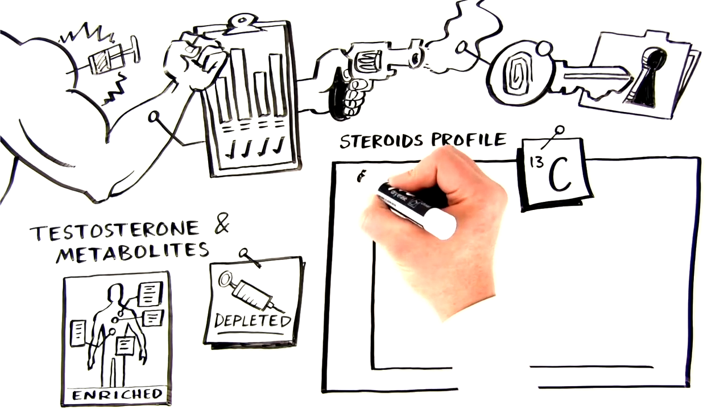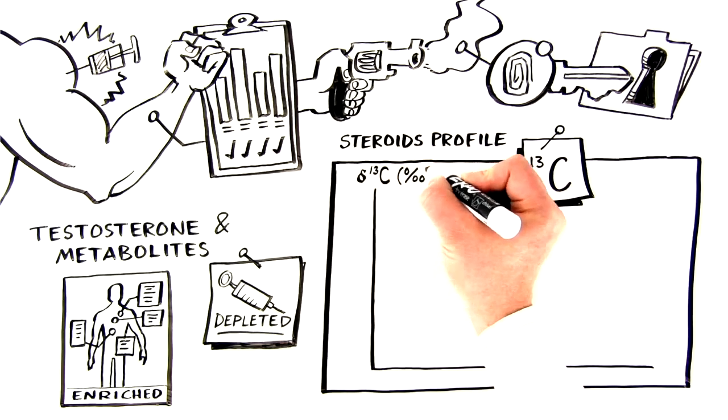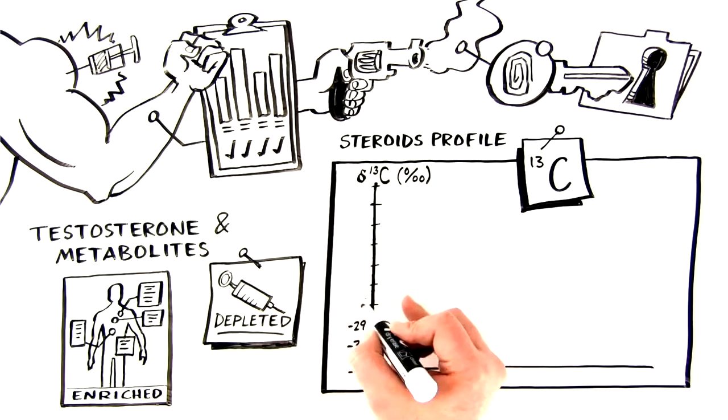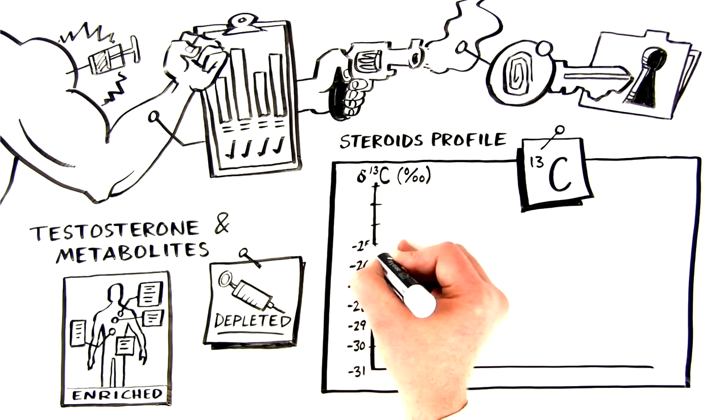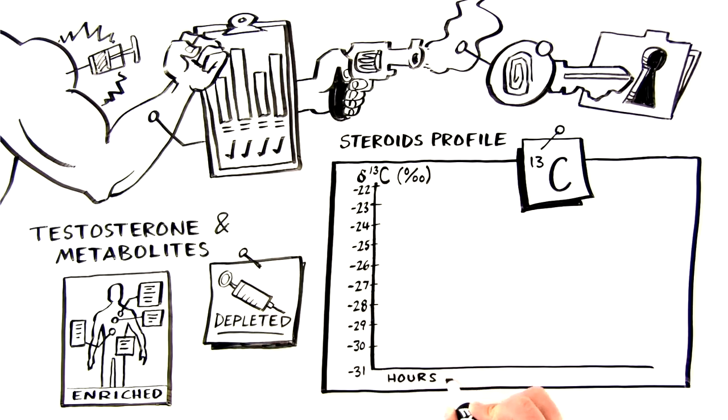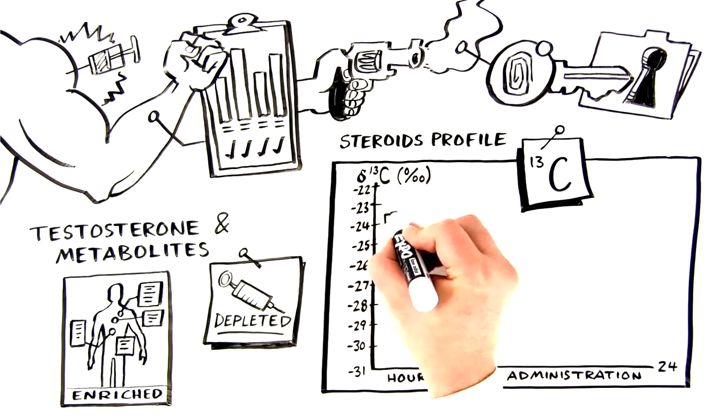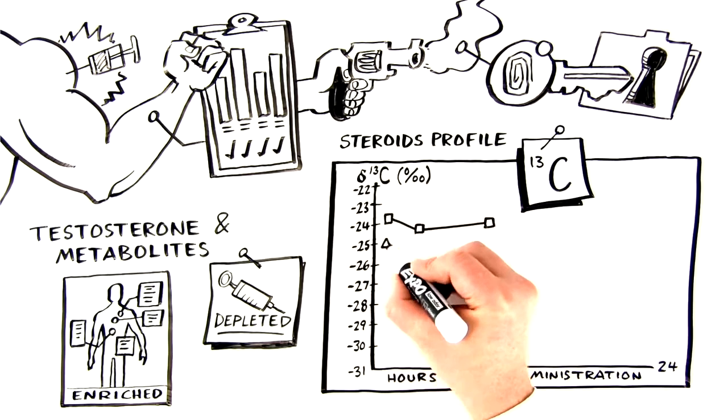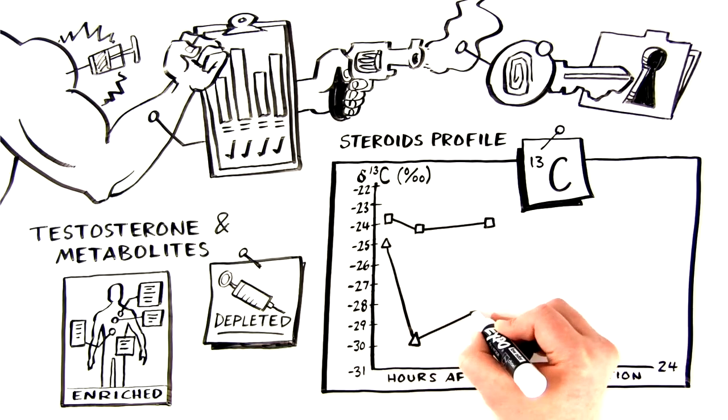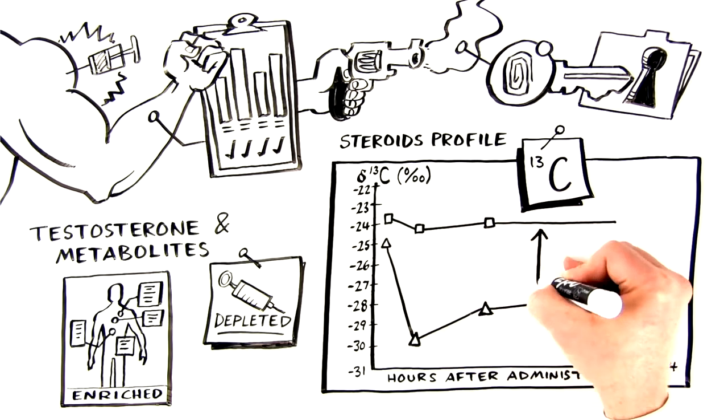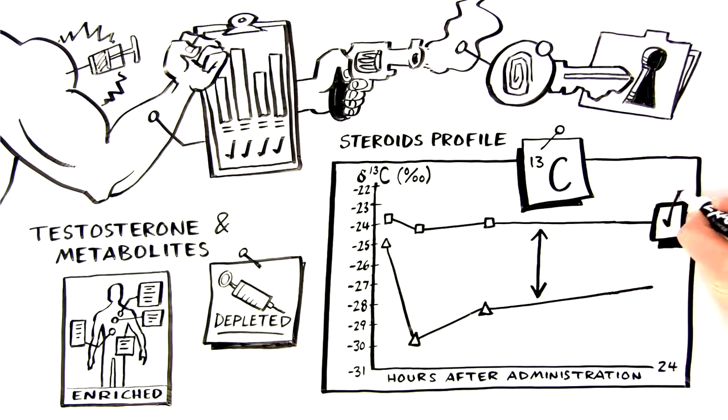So, if an athlete has consumed synthetic endogenous steroid copies, you'll know it. Unlike administered steroids, endogenously produced steroids are not involved in the androgen metabolic pathway, so they display a typically enriched carbon ratio. Therefore, differences between carbon isotope fingerprints distinguish endogenous anabolic steroids from their synthetic analogues.